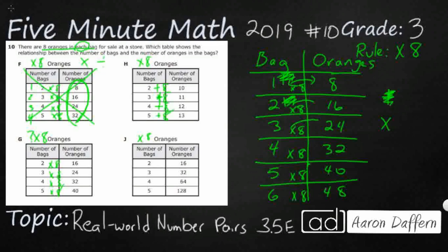But two plus eight is 10, three plus eight is 11, four plus eight is 12, five plus eight is 13. So it's plus eight, not times eight.